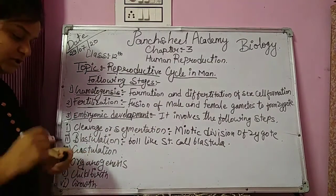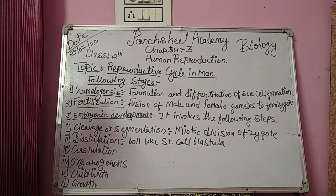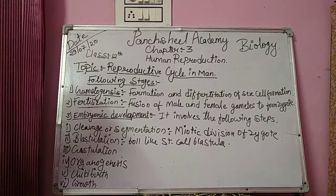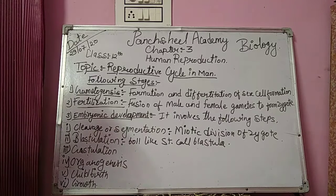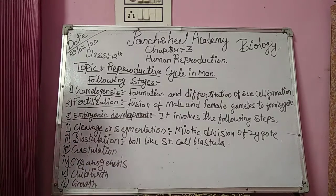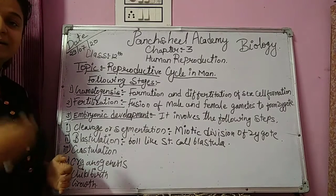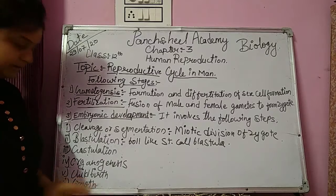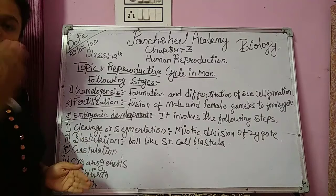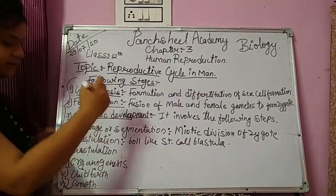The second stage is gastrulation. In gastrulation, the morphological movement of cells causes the blastula to give rise to germ layers. The embryo at this stage is known as the gastrula. Next is organogenesis — the formation of various organs in the infant by the different germ layers. After that is childbirth and growth, meaning the increase in size of the infant into an adult. Write down these points in your copy.